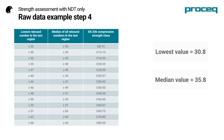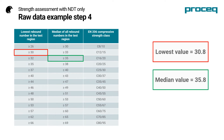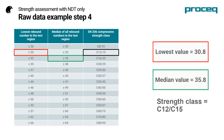It's just a simple matter of checking the values against the lookup table. The lowest value is 30.8, the median value is 35.5, so my strength class is C1215.